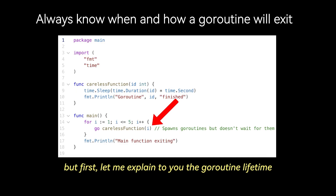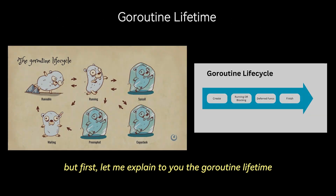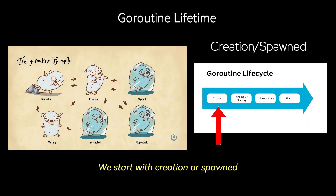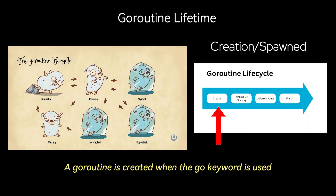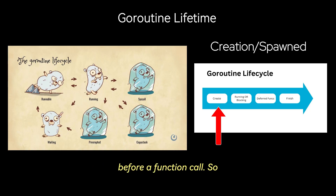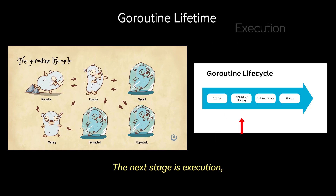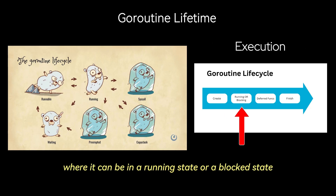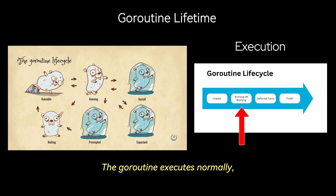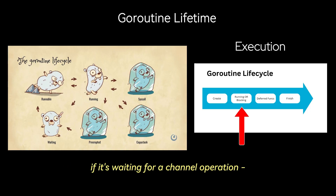Let me explain the goroutine lifetime. We start with creation, or spawned: a goroutine is created when the go keyword is used before a function call, starting execution asynchronously and potentially running concurrently with other goroutines. The next stage is execution, where it can be in a running state or a blocked state. The goroutine executes normally but may pause if it's waiting for a channel operation — for example, a receive.